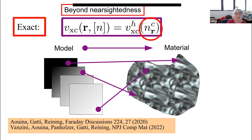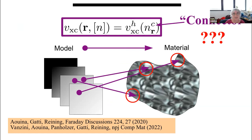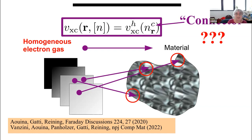In principle there exists an exact value for this descriptor. We can imagine from physical intuition that this exact answer must be some kind of average around the point where we are — not a simple average, but somehow linked to what happens in a reasonable region around it, because we still believe the butterfly on Neptune would not influence our result. This quantity — in this case the density, or more generally the descriptor of the model system — we call the connector, because it connects our model and our real material. The model can be the homogeneous electron gas, but we are not bound to it; there are other models, and we can look for the best models to employ.